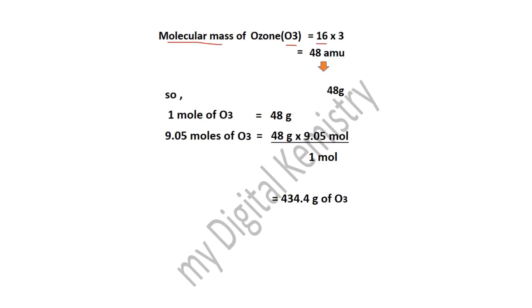Oxygen का atomic mass 16 है। Ozone में 3 atoms of oxygen हैं, इसलिए 16 × 3 = 48 AMU। यही molecular mass of ozone है। AMU को grams से replace करने पर: 1 mole of ozone = 48 grams। अब 9.05 moles का mass find out करना है। Cross multiplication: 48 × 9.05 ÷ 1 mole = 434.4 grams of ozone। यही answer है।